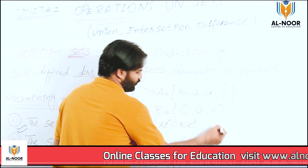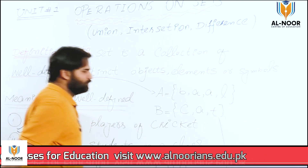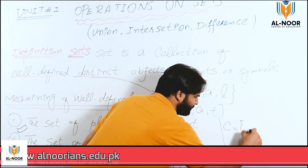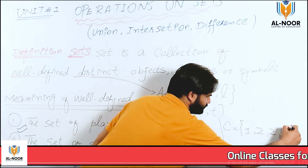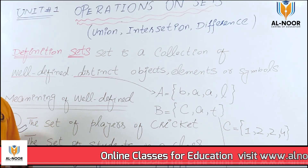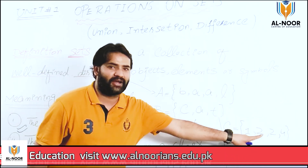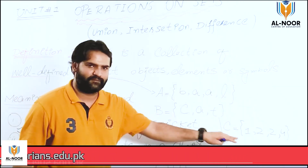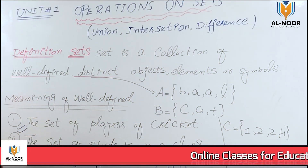Distinctions کی مزید مثال دیتا ہوں۔ ہمارے پاس set C ہے: 1, 2, 2, 4۔ یہ بھی set نہیں ہے کیونکہ '2' دو بار آ رہا ہے — یہ distinct element نہیں ہے۔ انشاءاللہ آپ کو یہ سمجھ آ گیا ہوگا۔